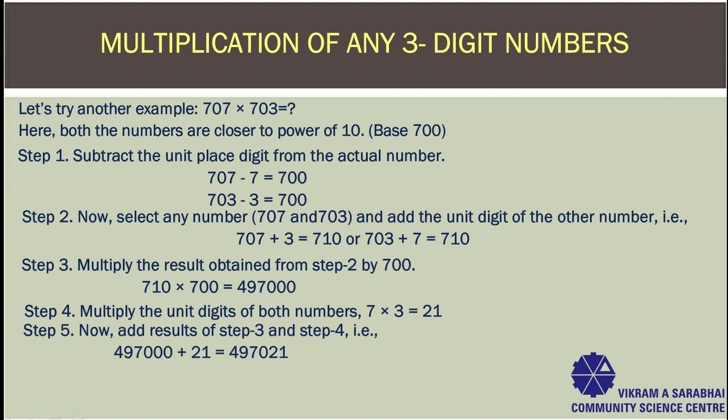Step 5: Now add the results of Step 3 and Step 4. From Step 3 we get 497000, plus from Step 4, 21. So the answer will be 497000 plus 21, which is 497021.